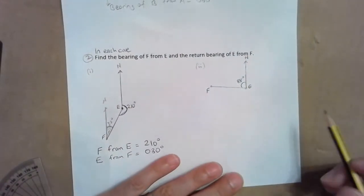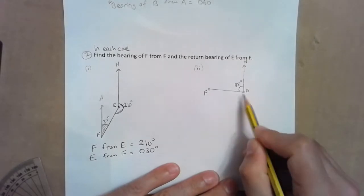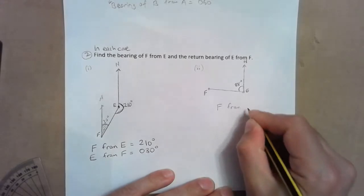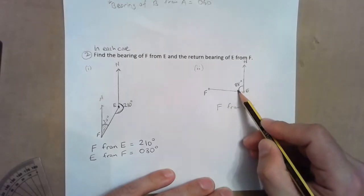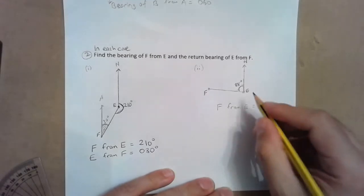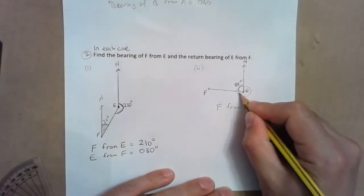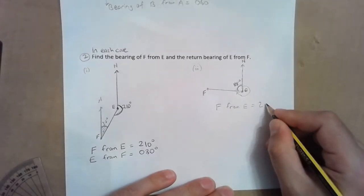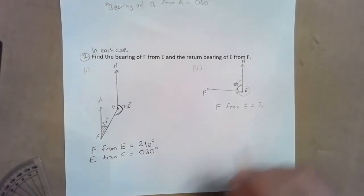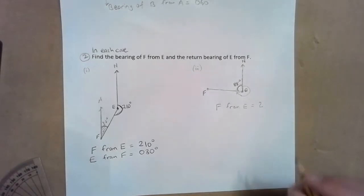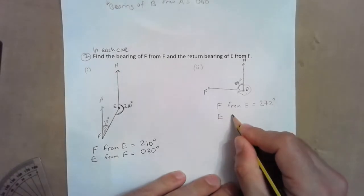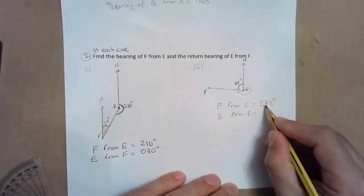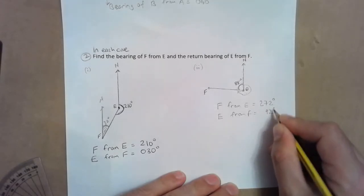Same idea here — we've got F from E. From E, north clockwise turn to get to F. Bearings are clockwise, so from E north clockwise that turn is 360 minus 88, which gives us 272 degrees. That is the bearing of F from E.